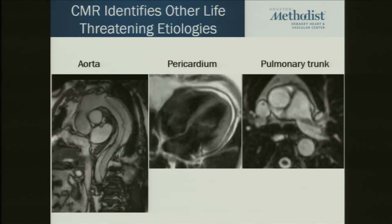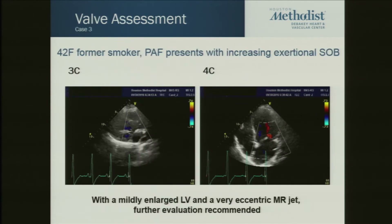With CMR, we're also seeing other things that cause chest pain: the aorta, the pericardium, and the pulmonary trunk for ruling out PE.